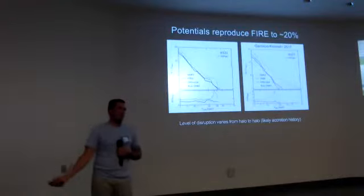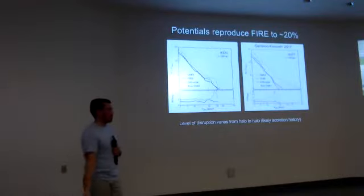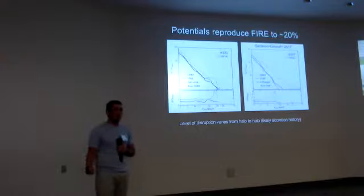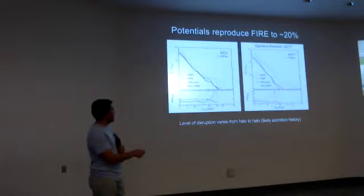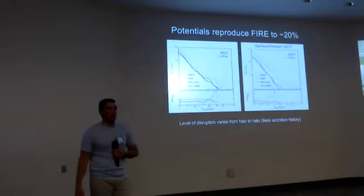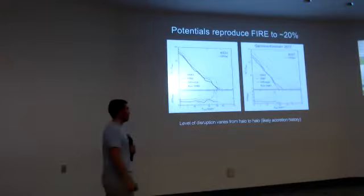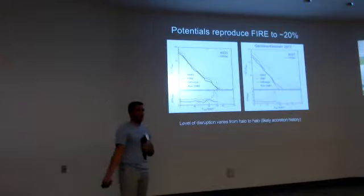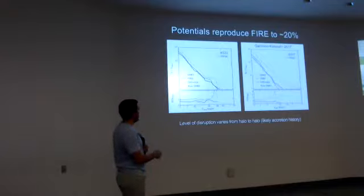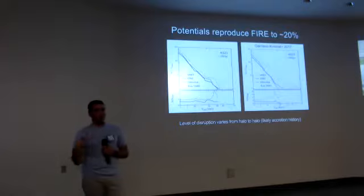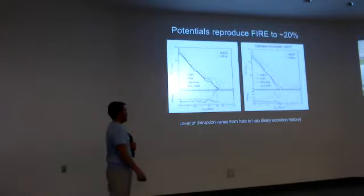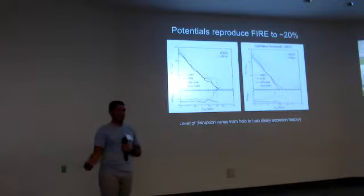We can look at the VMAX functions — sub-halo VMAX functions — of two halos that were run using this technique from the Latte simulations. You can see that the dark matter plus disk does a really good job of matching the hydro simulation results to the order of about 20%. One note I want to highlight is that if you look at the original dark matter-only populations, the level of disruption varies significantly from halo to halo, even with just these two halos alone. So halo-to-halo variation is going to be an important factor to take into account.